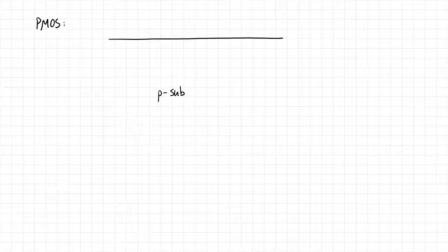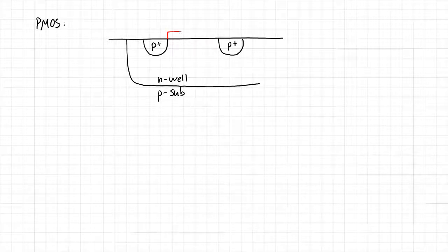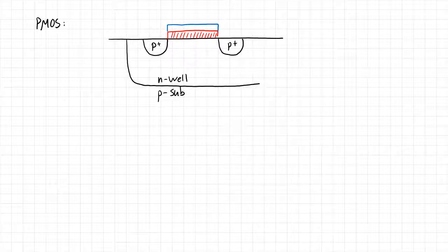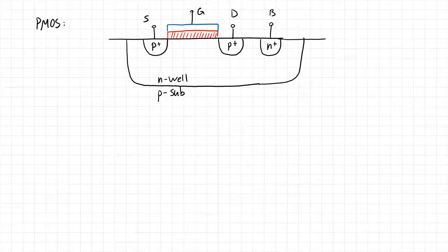If we want to make a PMOS device, we actually have to put it in an N-well in order to create our P-plus regions, after which we construct our usual transistor. We have our gate dielectric — again, either silicon dioxide or some sort of hafnium or zirconium oxide, some sort of high-K dielectric — connected to the gate terminal. We have our source terminal, drain terminal. But now we have this N-well, and we have to bias it at some potential, so we add another highly doped region for the bulk of the device.